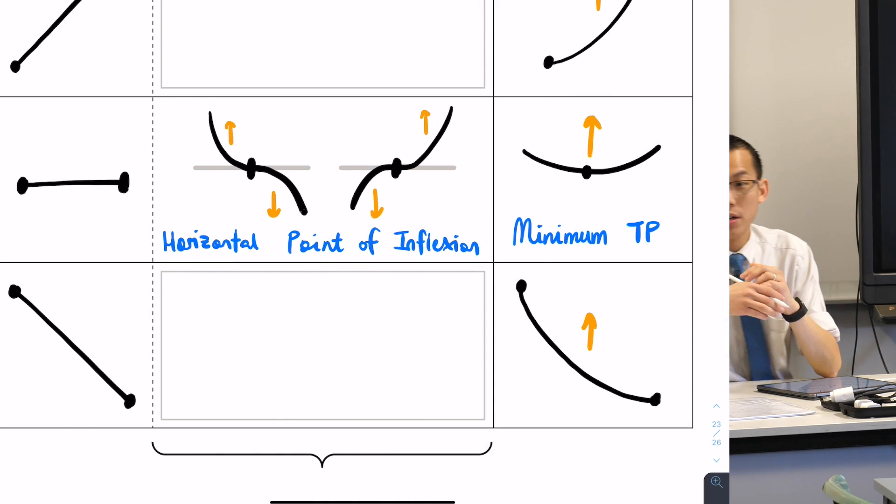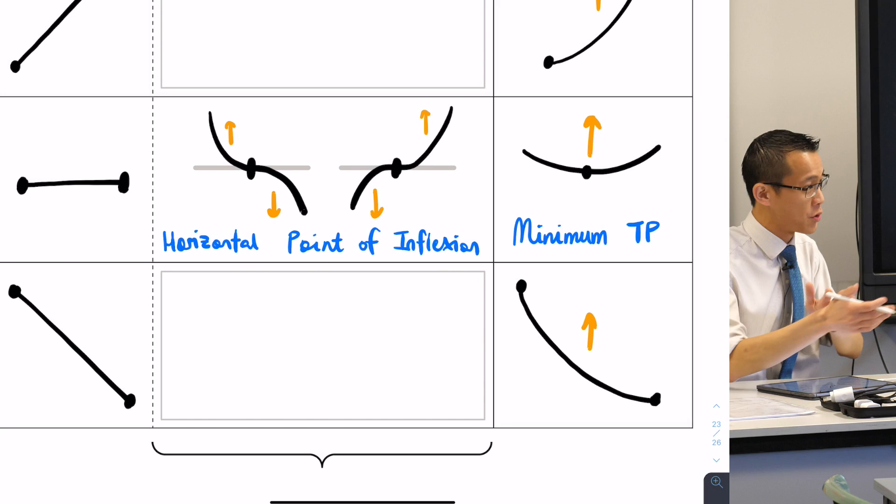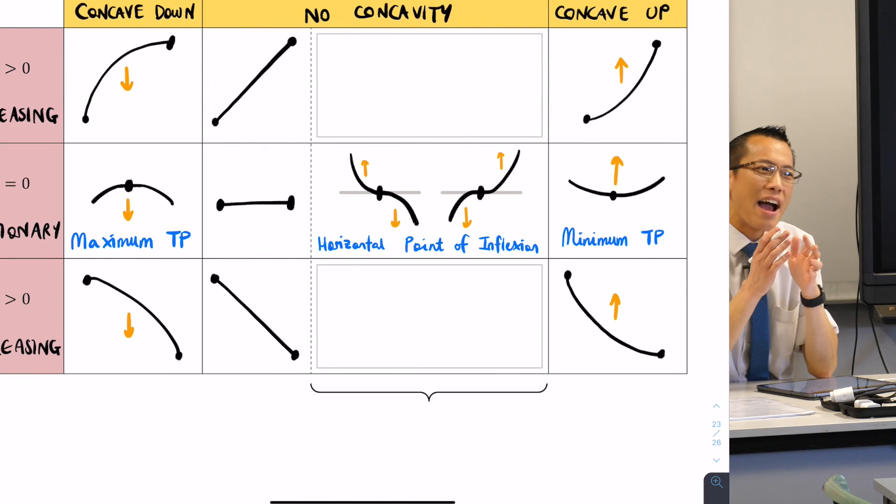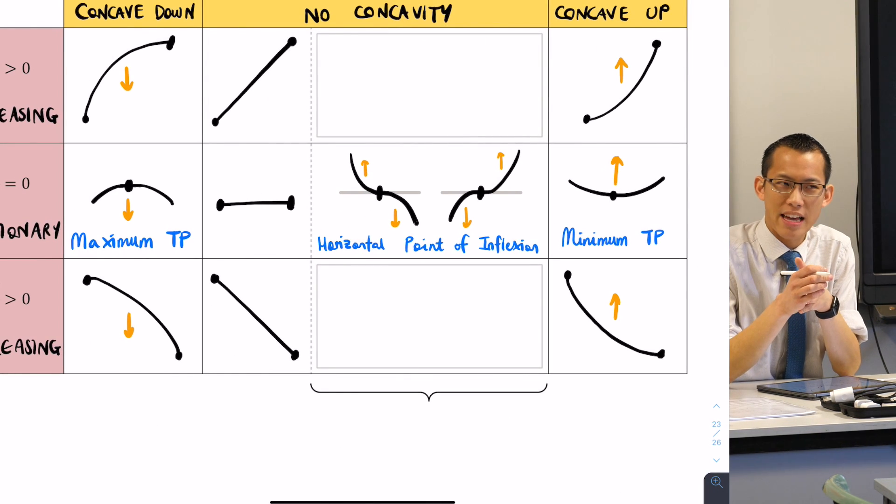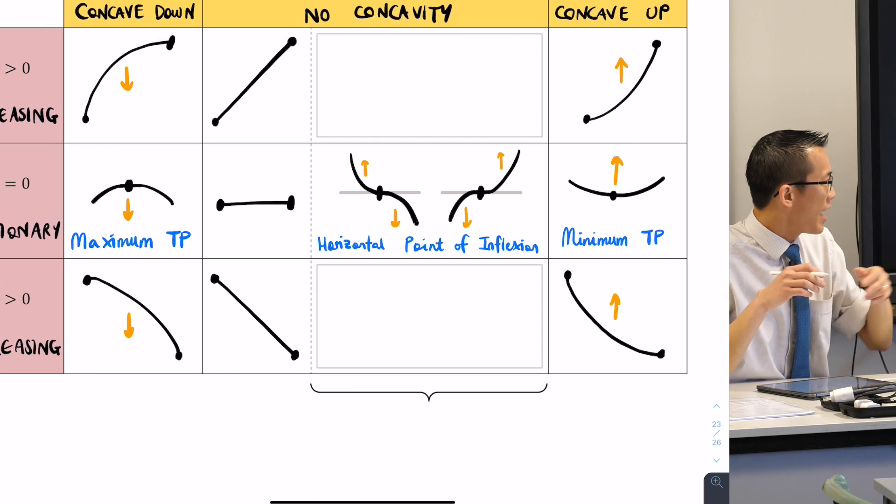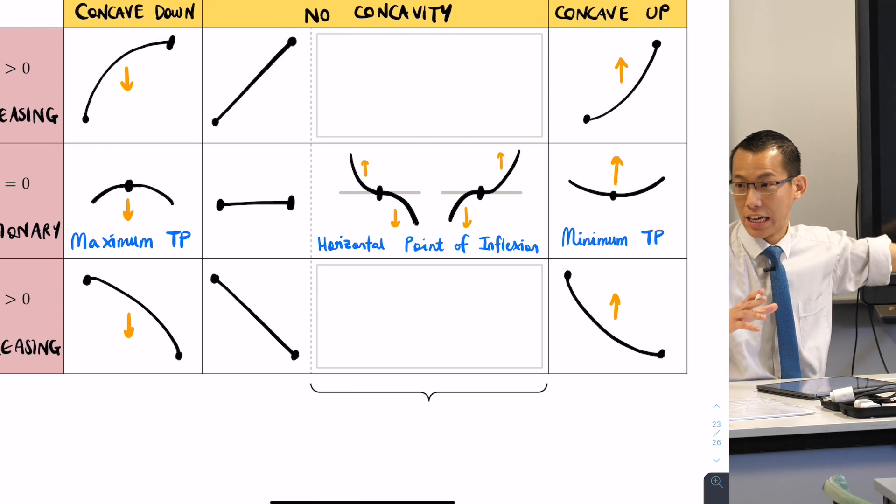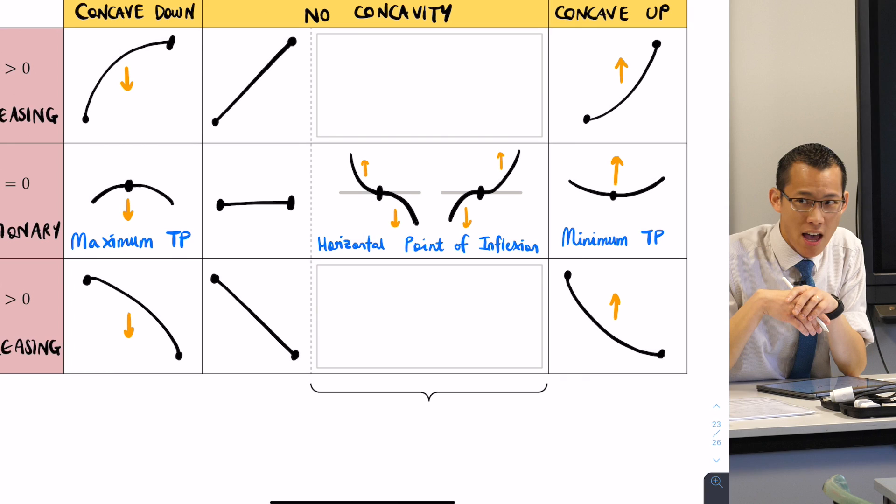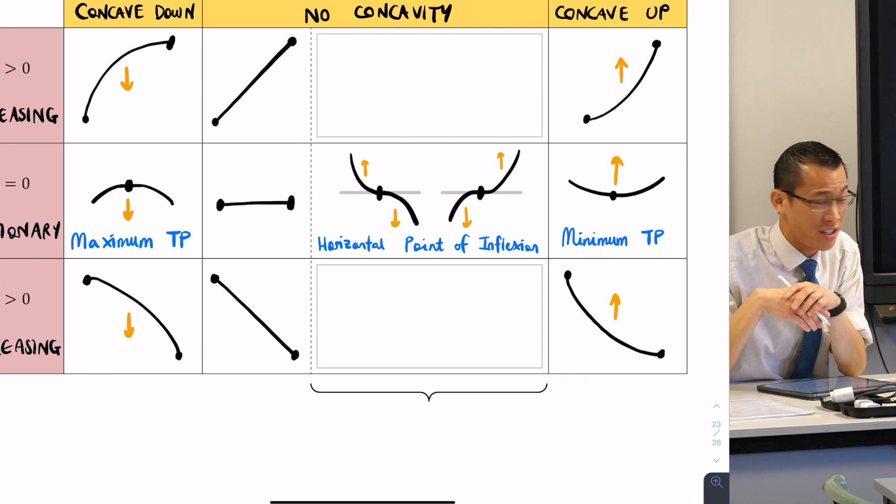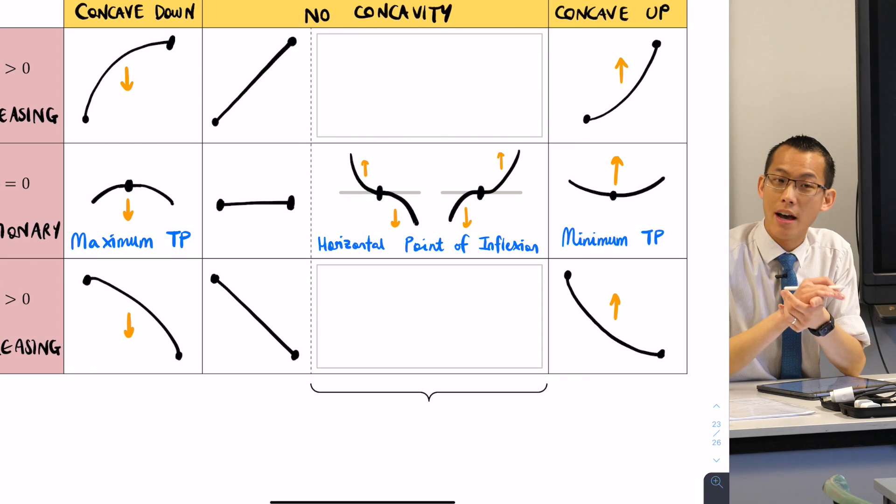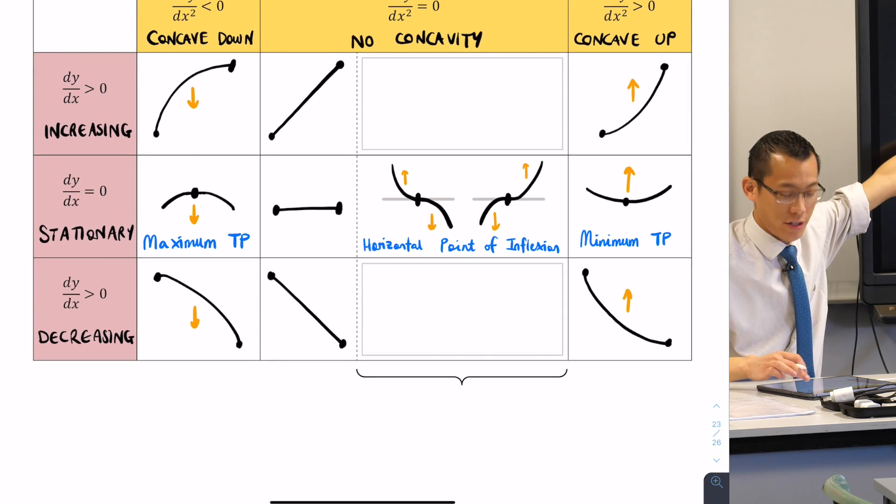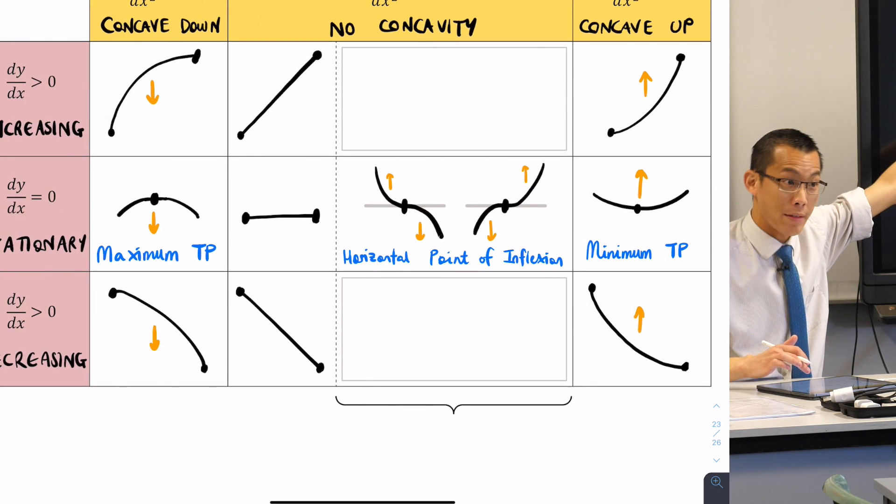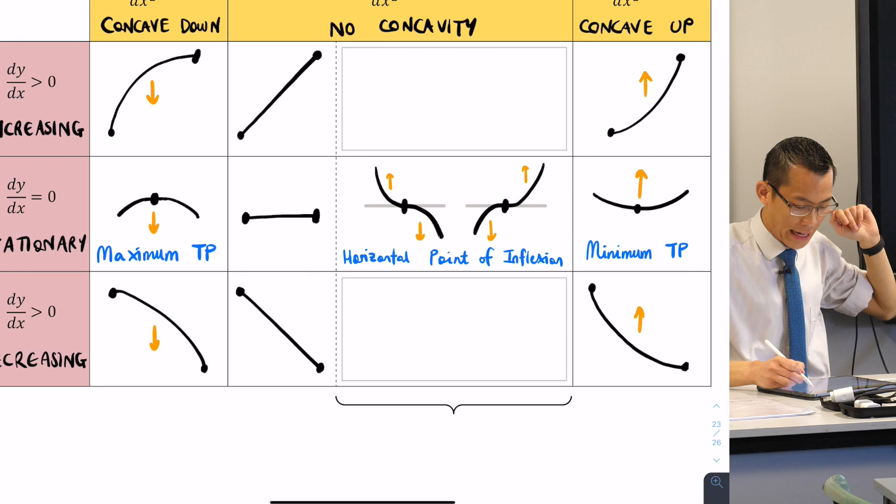Now these horizontal points of inflection, we had to introduce them to you first because they're related to stationary points which we learned about a while ago. But I wonder if any of you kind of suspected: if there are horizontal points of inflection, then are there other kinds of points of inflection that aren't horizontal? And the answer is yes. You can have points of inflection that are not horizontal, they might be increasing. They're going to look like this.